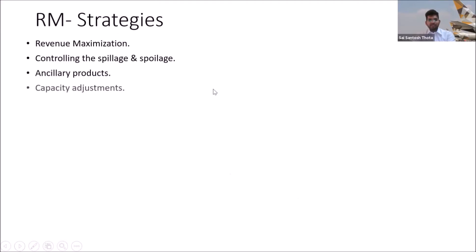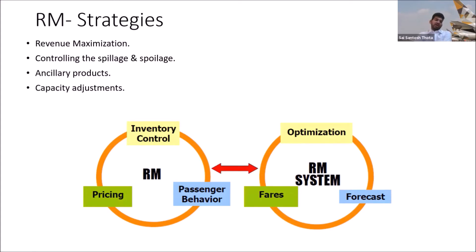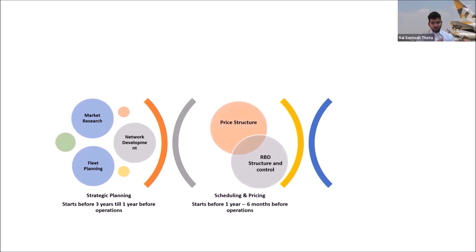The RM strategies are basically revenue maximization. I've shown you different options which we have been using through the RM systems, and controlling the spillage and spoilage. Before three years, for any airline, strategic planning has to be there. This basically starts before three years until one year before the operation starts. This is market research and network development of the type of fleet you are planning for that route or those routes.